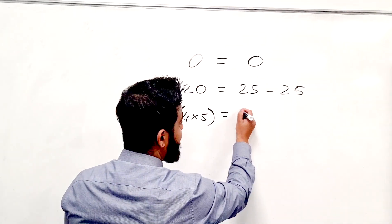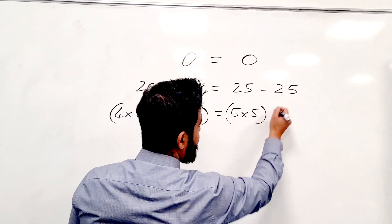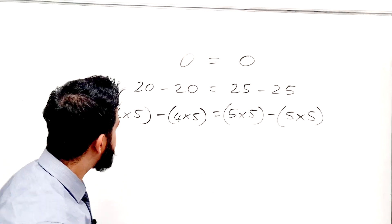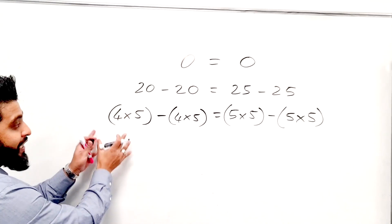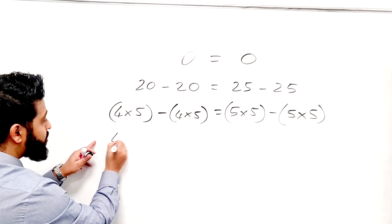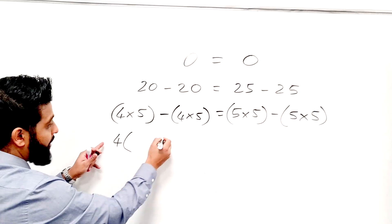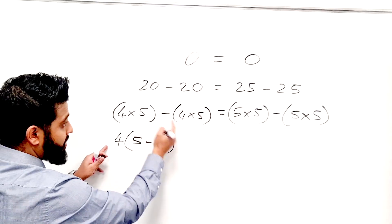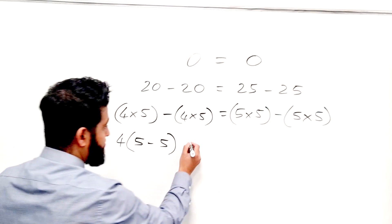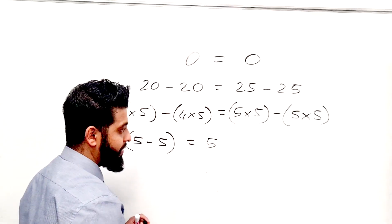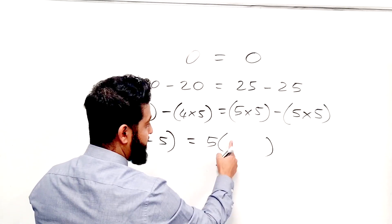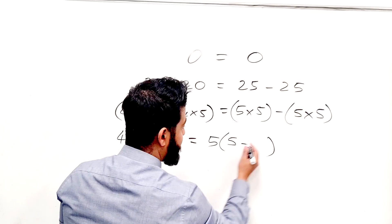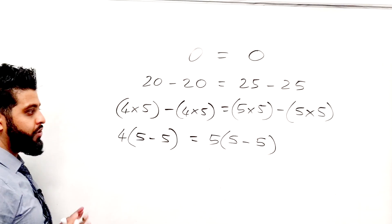Similarly, 25 can be written as 5 times 5, and minus another 5 times 5. So far, have I done anything wrong? Now I'm going to factorise. There's a common factor of 4, so I'm going to take 4 out. So when I multiply with what's inside the bracket, I want 4 times (5 minus 5). Next, I'm going to factorise the 5 out. It's 5 times something, so I want 5 times 5, minus another 5 times 5, so 5 times another 5.